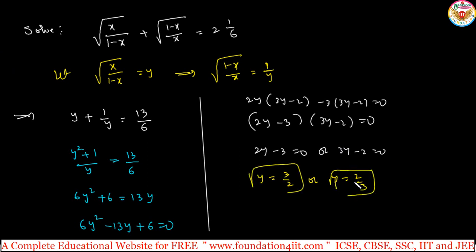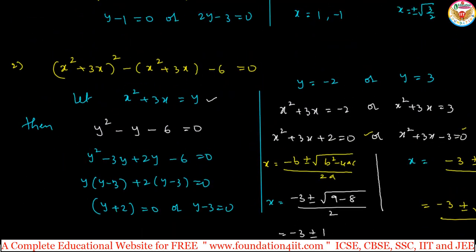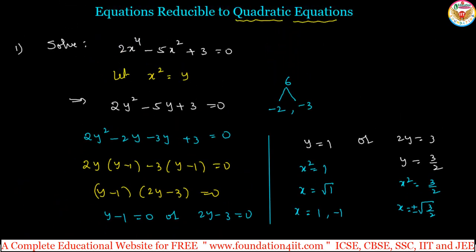So y is 3 by 2 and 2 by 3. Based on this, substitute the y value back again and simplify. You will get one more quadratic equation to solve. The main thing is: we are reducing to simpler terms and then solving. This is the method. We can apply this concept here.